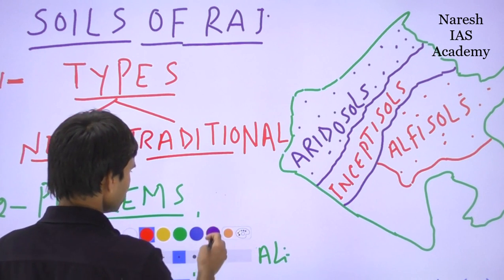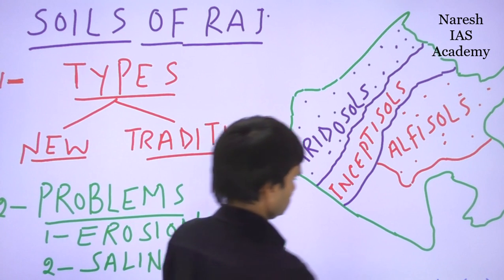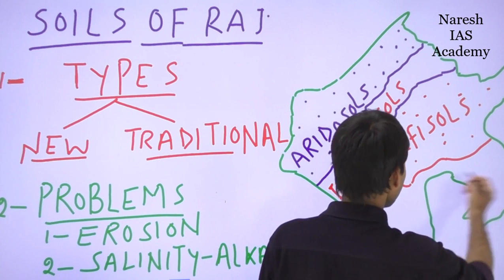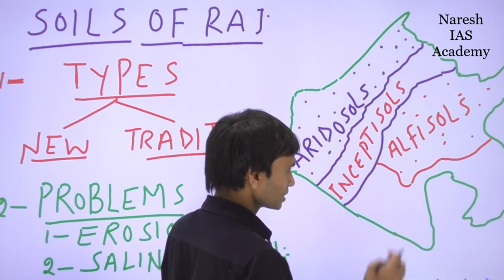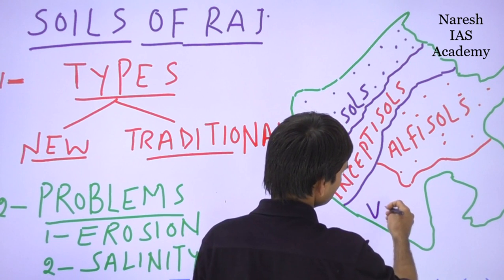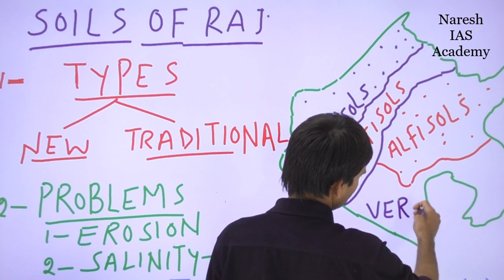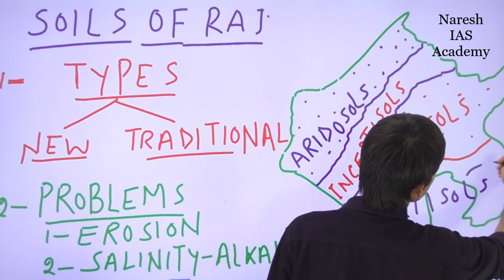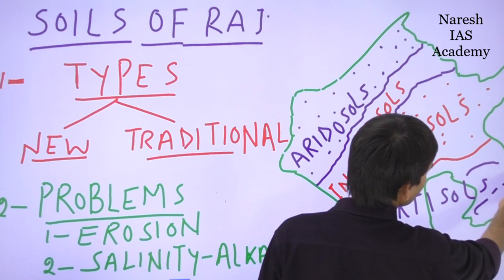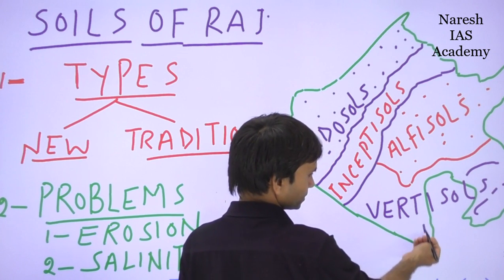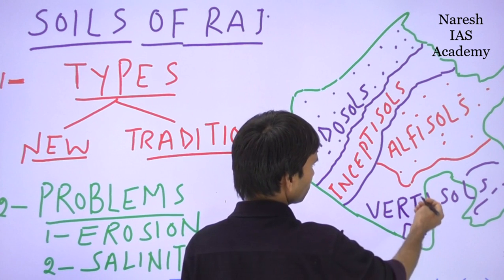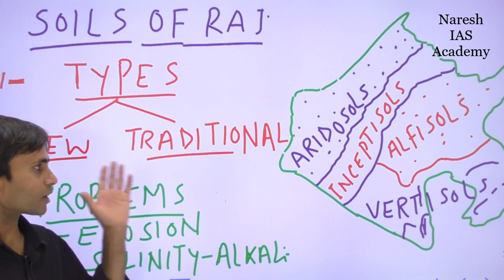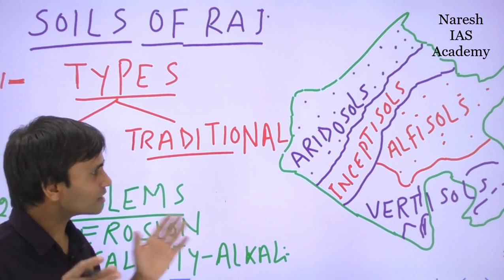The fourth is the southern part of Rajasthan - the Hadothi plateau - which comes under Vertisols. Vertisols mainly cover the Hadothi region: Baran, Jhalawar, Kota, Banswara, Dungarpur, Pratapgarh, Chittorgarh, and the southern part of Udaipur district. This is the new classification of soils in Rajasthan.